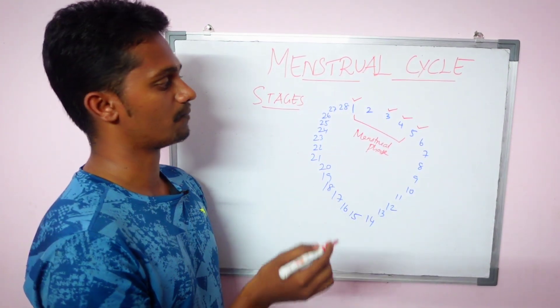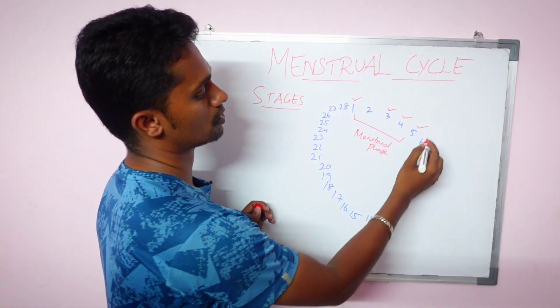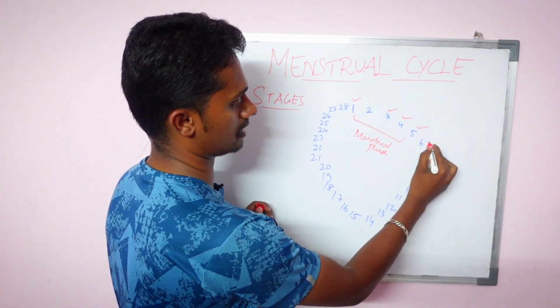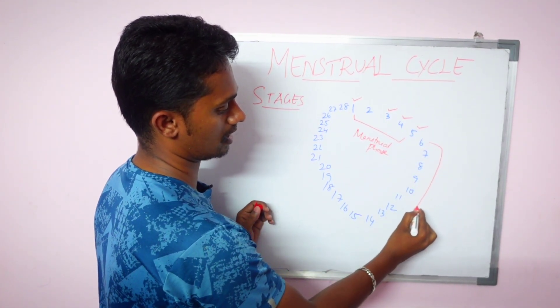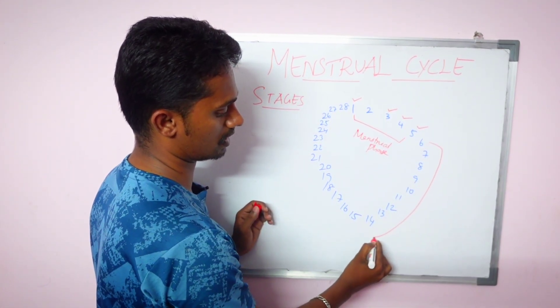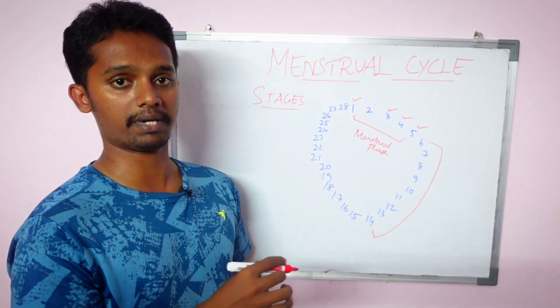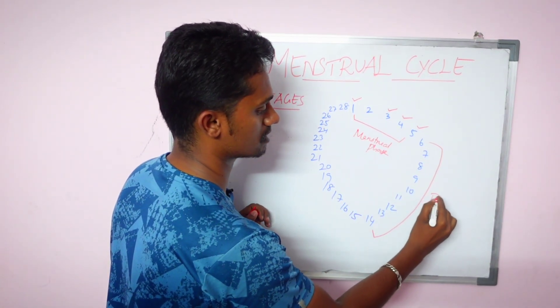Then this is the second phase. The second phase starts on day 6 and continues to day 14. This phase is called the follicular phase.